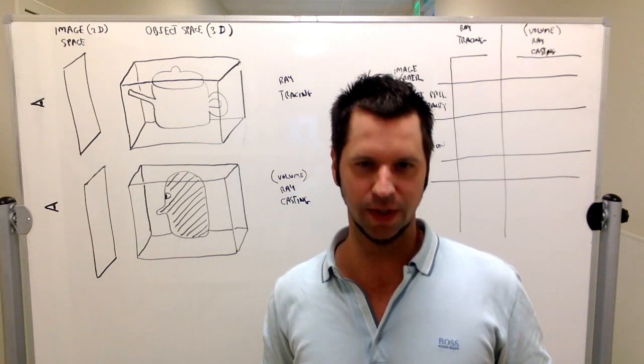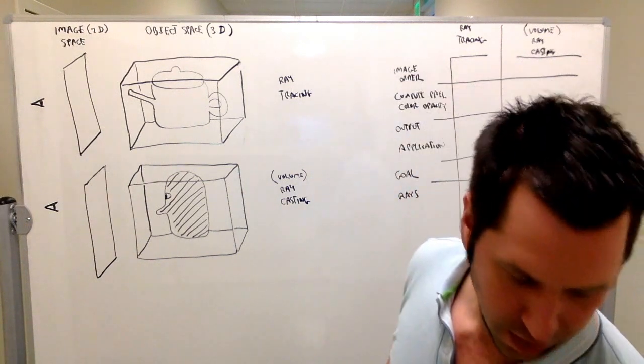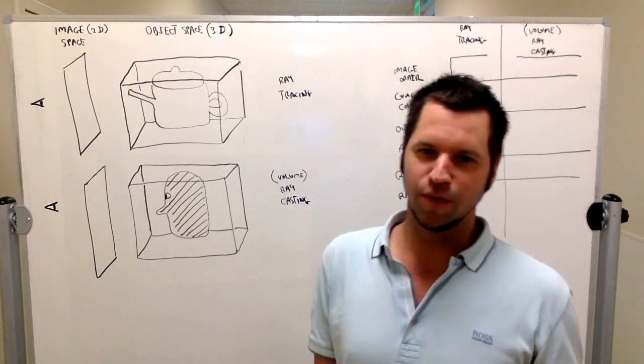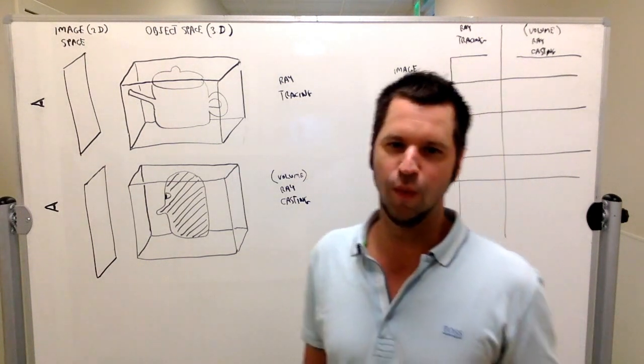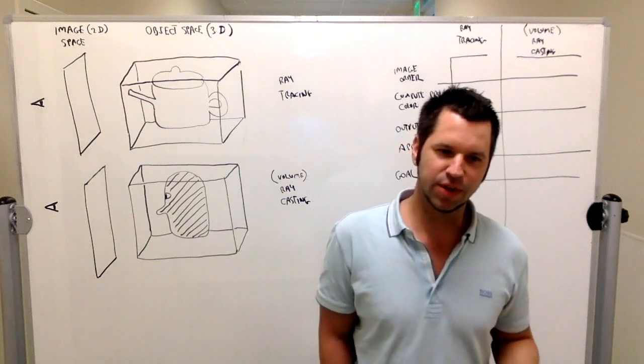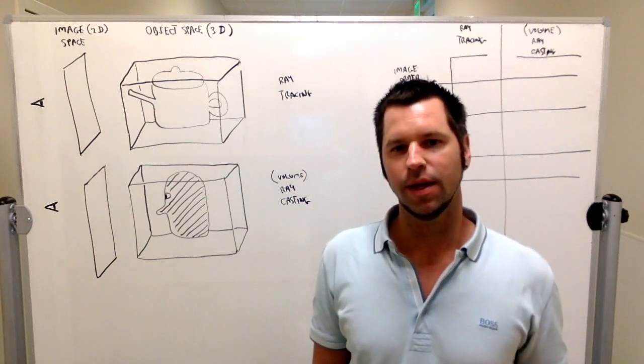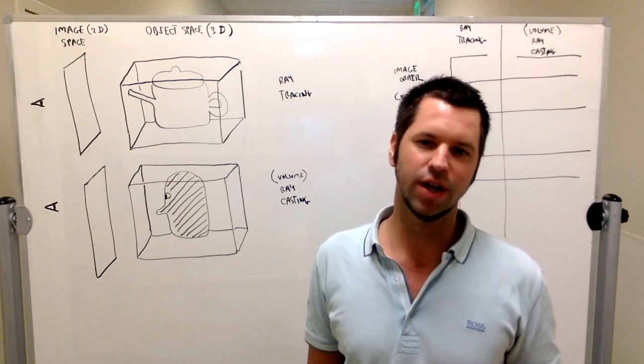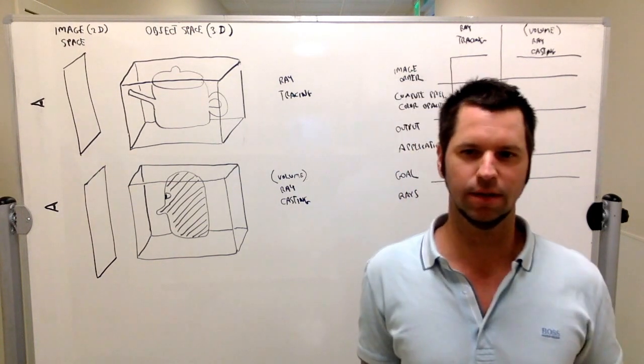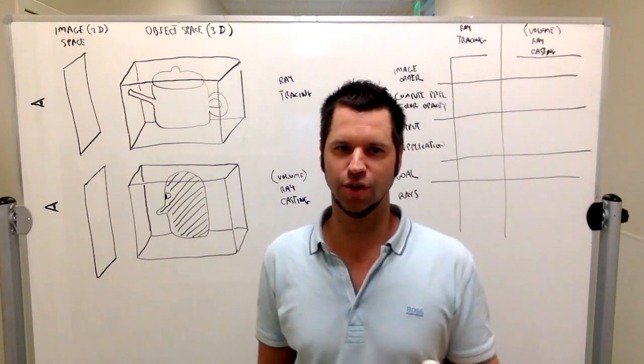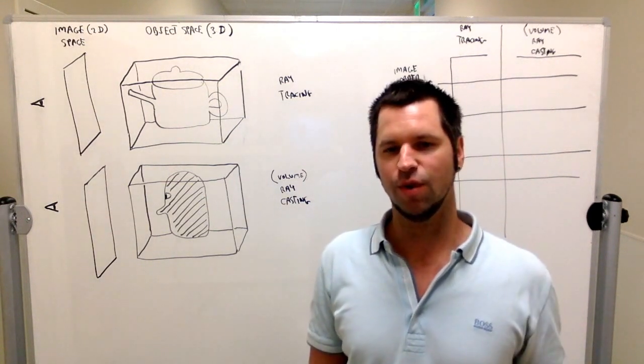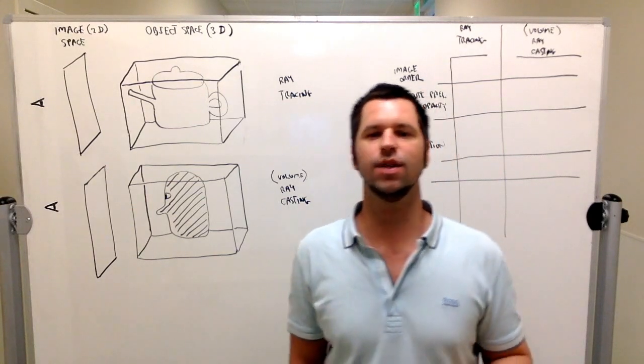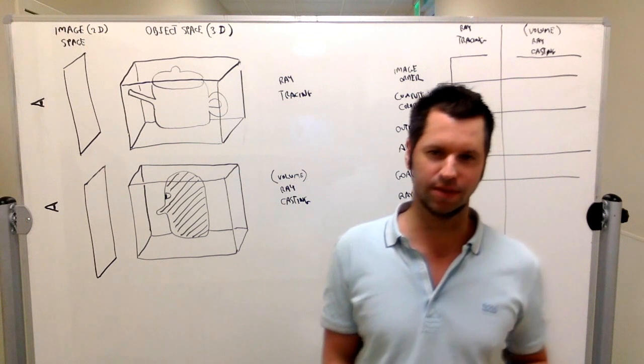Let's start with an informal definition of ray tracing. Ray tracing is an algorithm to compute accurate lighting and shading of a three-dimensional scene. Sometimes the goal is to compute a photorealistic scene rendering—not always, but that's sometimes the goal.